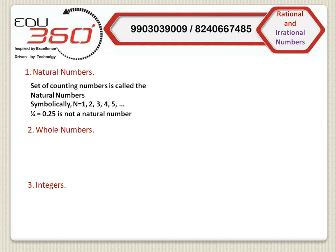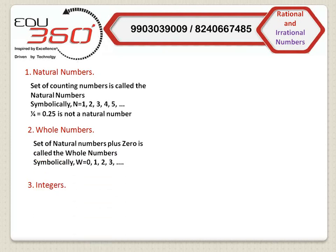Now, what are whole numbers? If we include 0 with the set of natural numbers, we will get the set of whole numbers. If we denote the set of whole numbers by W, it will include 0 to plus infinity, excluding any fractions or decimal points.